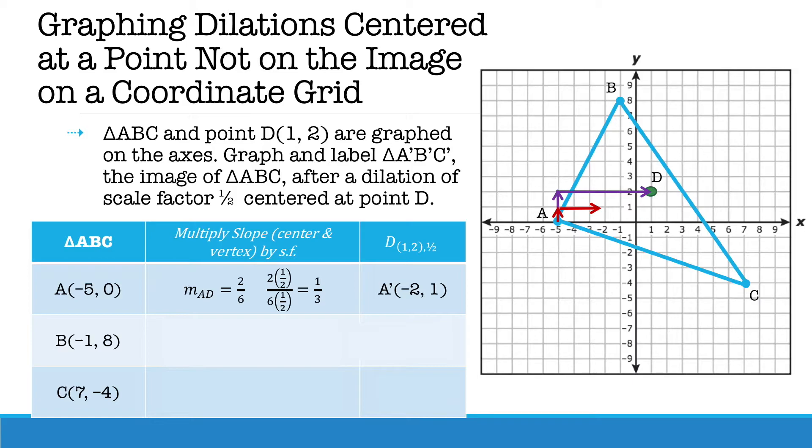Now we're going to do the same thing for B and C. For point B we're going to count down 6 and to the right 2. Multiplying numerator and denominator would give us a slope of negative 3 over 1. Counting down from B, B' would then be the point (0, 5).